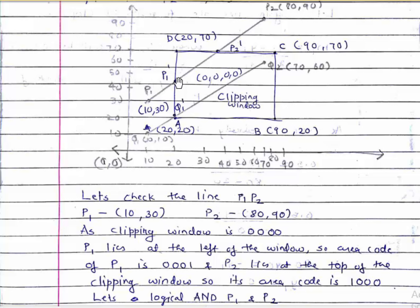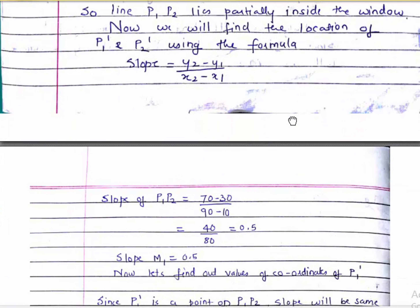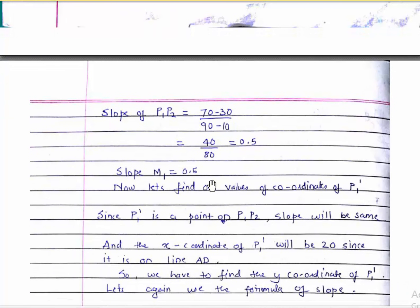We need to find the coordinate positions of P1' and P2'. First, we find the slope: m = (y2 - y1) / (x2 - x1). That is (90 - 30) / (80 - 10) = 60/70... wait, slope = (70 - 30) / (80 - 10)... let's compute: y2=90, y1=30, x2=80, x1=10, giving slope = 60/70 ≈ 0.5. Actually the calculation gives slope as 0.5.